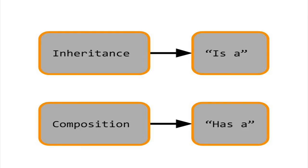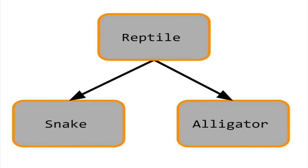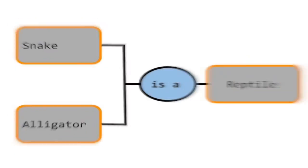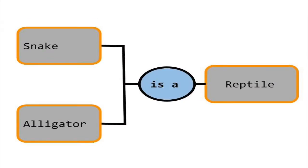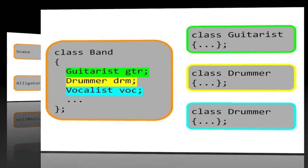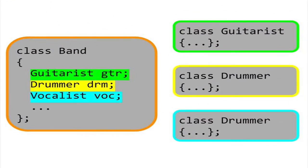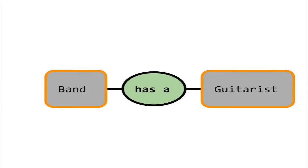Inherited classes are commonly described as having an is-a relationship with each other, while composition involves a has-a relationship between classes. We can say that snake is a reptile and that alligator is a reptile, but we cannot say that guitarist is a band. Instead, we say that the band has a guitarist.